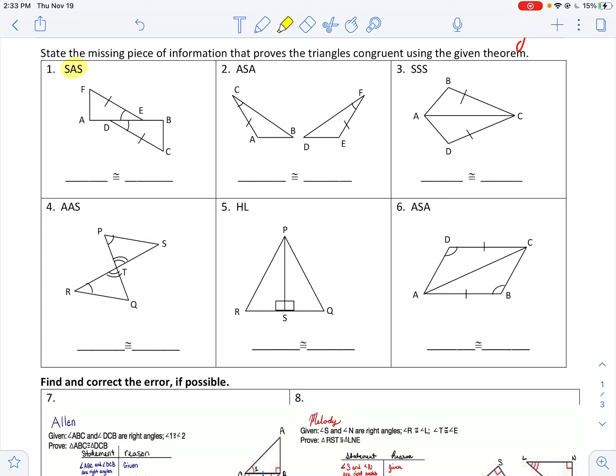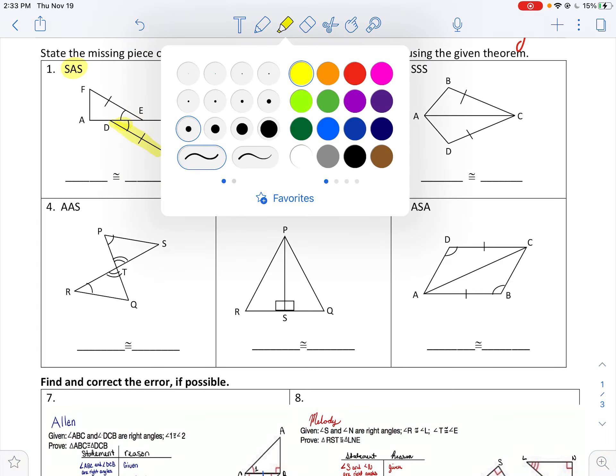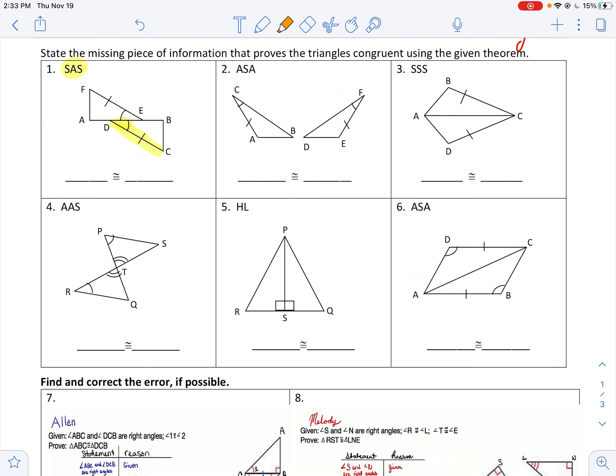So I'm looking for side-angle-side. That is the first thing that I have to look for, side-angle-side. And let's identify what I have right now. I have a side, and I have an angle. I'll do the other one in orange. I've got a side, I've got an angle.